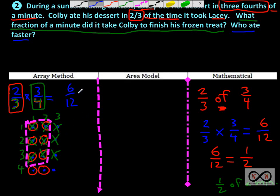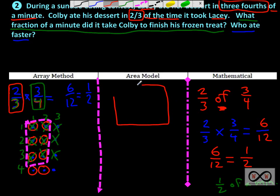Six-twelfths is equal to one-half. So the array method confirms our answer. Let's look at another visual fraction model — the area model — and set that up with a rectangle. Sometimes people call it the rectangular array model. I see it as the area inside a rectangle. Both views work, so let's apply our fractions to this.